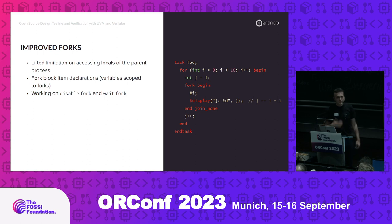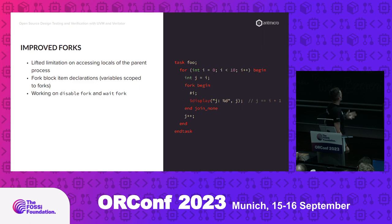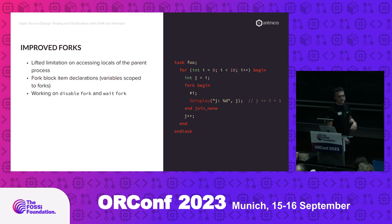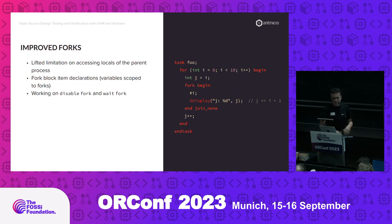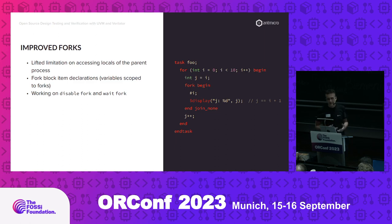We haven't stopped there — we've been improving these features. One area that was lacking in the initial implementation is that forks had some limitations. The main one was that you couldn't access local variables of a parent process from a forked process, because the parent process can stop existing before the forked process finishes. In order to prevent you from accessing variables that no longer exist, we just forbade that. But now we've fixed that, and that was one of the things that UVM uses.